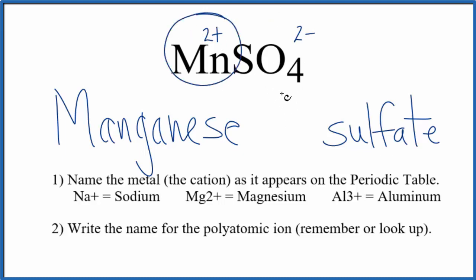Because we have the 2 plus on the manganese, we're going to put a Roman numeral 2 in parentheses, and the name for MnSO4 is manganese 2 sulfate.